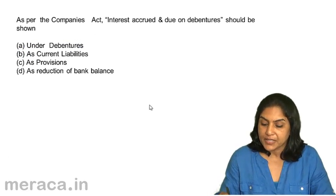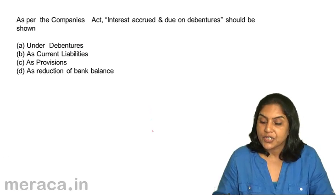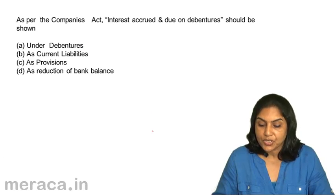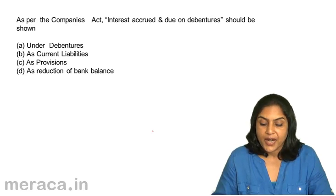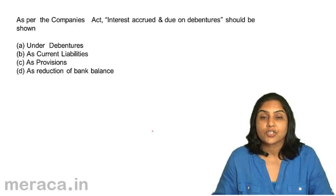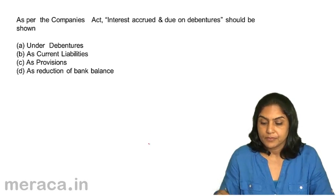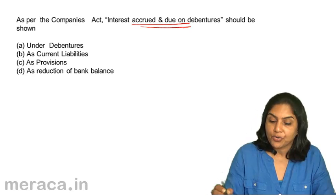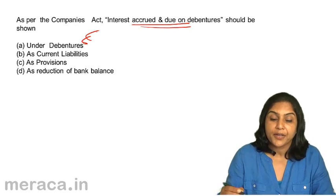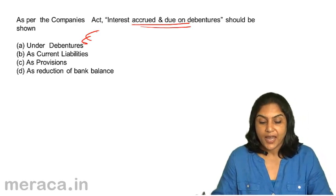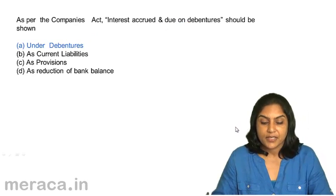As per the Companies Act, interest accrued and due on debentures should be shown: A. Under debentures, B. As current liabilities, C. As provisions, D. As reduction of bank balance. Interest which is accrued and due is shown under debentures. Correct answer is A — under debentures.